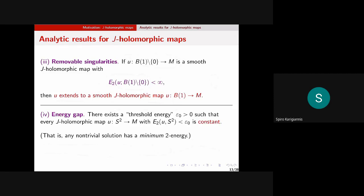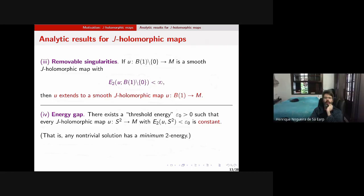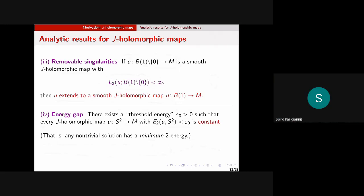There's an energy gap: for S2 with the round conformal class there is a magic number epsilon-naught depending on the geometry such that every J-holomorphic map from S2 into M whose energy is less than this threshold must be constant. So any non-constant solution from the round two-sphere must have a certain minimum two-energy.